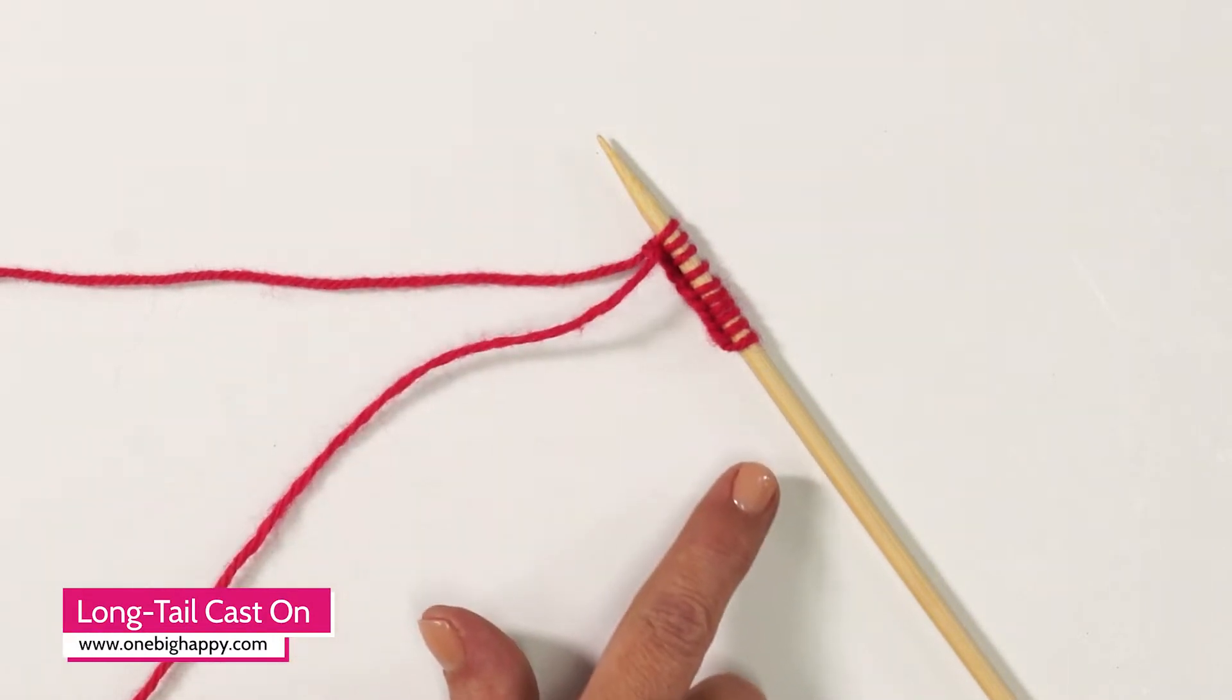Casting on is the first step in any knitting project. It's how you put the yarn on your needle.